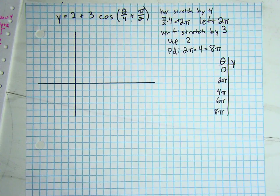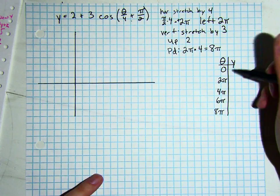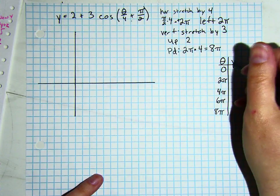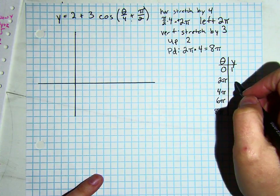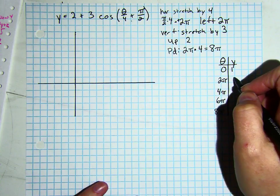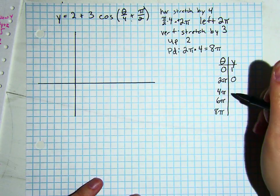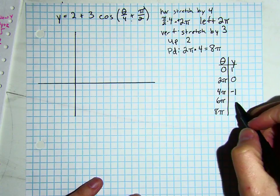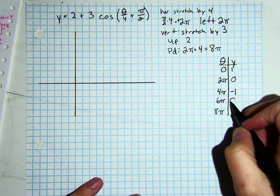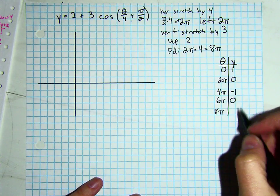Now for our y values, we are going to use our parent graph y values. So cosine starts at 1, our next important point is at 0, our next important point is at negative 1. Our next important point is at 0, and our last important point is at 1.